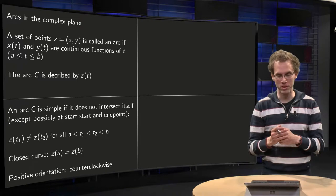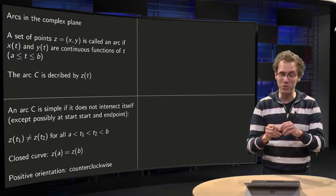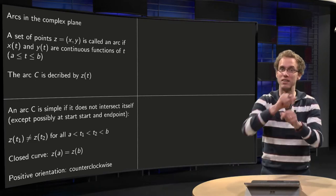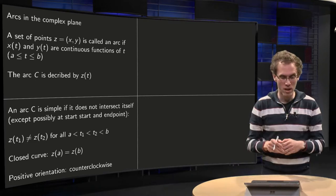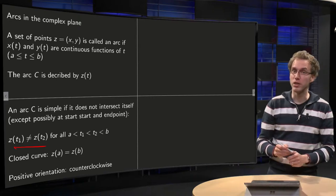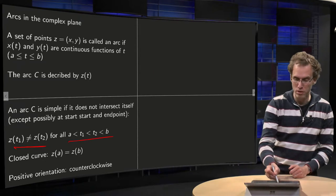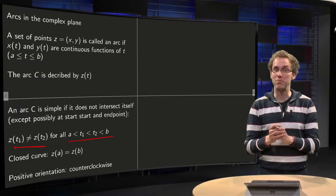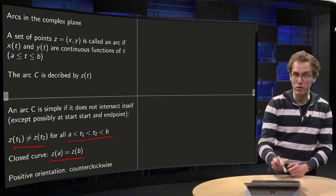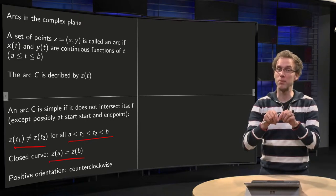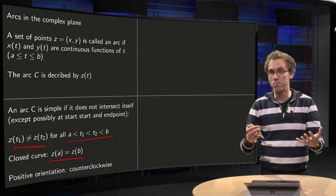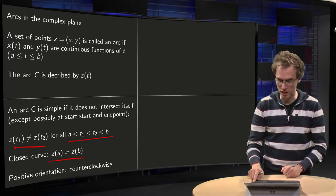Now we can have some basic properties. An arc C is called simple if it doesn't intersect itself, except maybe at the start and end point. So formally, z(t1) is not equal to z(t2) for all t1, t2 between a and b, if they are not equal. The curve is called closed if z(a) equals z(b), and a positive orientation is a counterclockwise orientation.